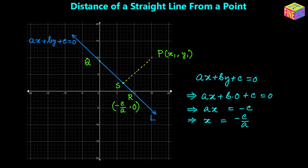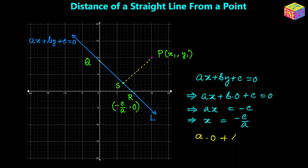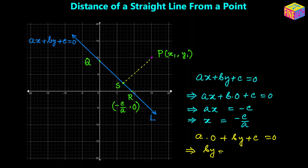Now let's find the coordinates of Q, the y-intercept. For the y-intercept we use x equals 0, so A times 0 plus By plus C equals 0, giving By equals negative C, so y equals negative C over B. The coordinates of Q are therefore 0 comma negative C over B.